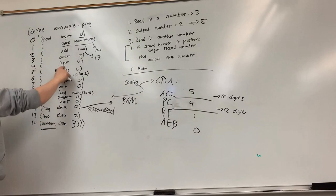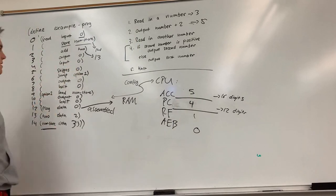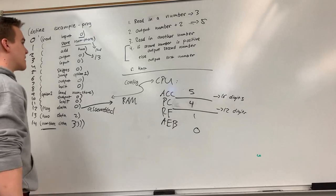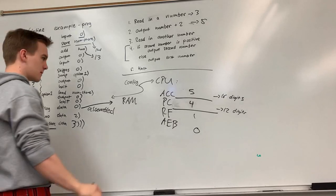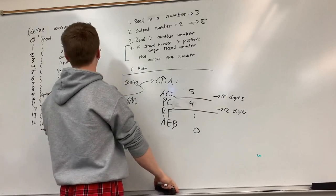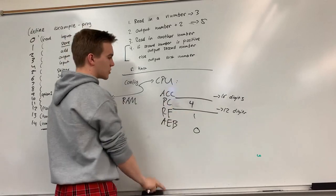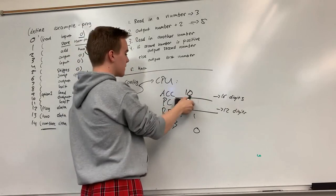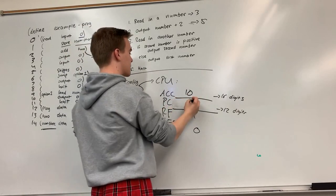Now we want to read input again. So say now let's say we give it the number 10. So we read the input number 10. That'll change our accumulator to 10. And again our program counter just kind of default increases by one. So this becomes five now.